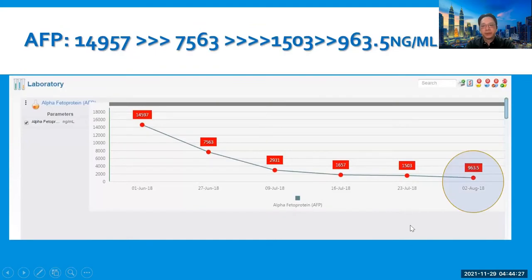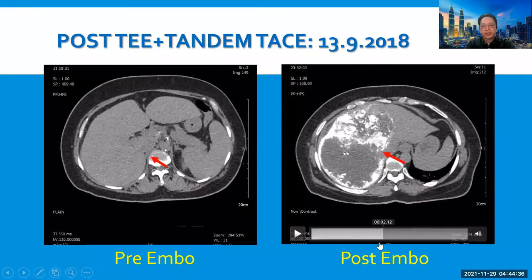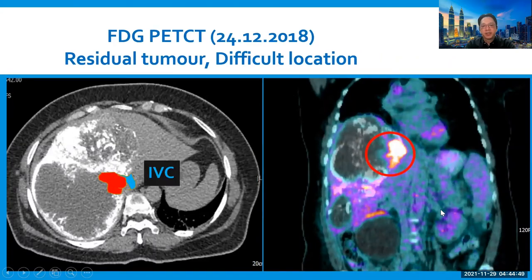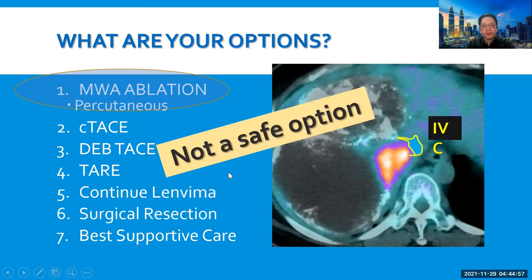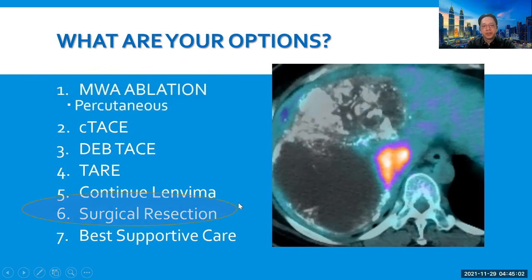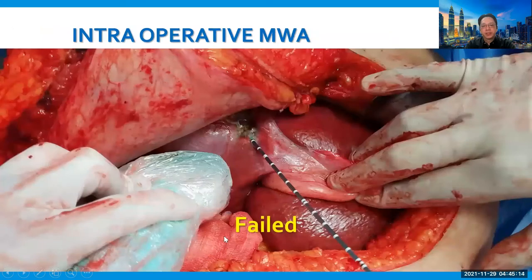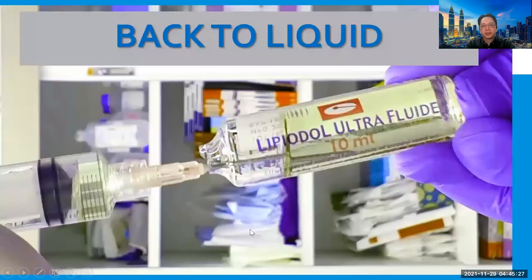Alpha-fetoprotein dropped further to 963. On completion CT scan, it showed a lipiodol defect in segment 8 adjacent to the IVC, indicating a negative 3D safety margin. On PET, it showed marked FDG avidity. In view of the close position with the IVC and adjacent critical structures, microwave ablation was not safe. Surgical resection was offered as per MDT recommendation. However, on-table the tumor was stuck to the left hepatic vein and was not surgically removed. Intraoperative microwave ablation was performed but also failed.